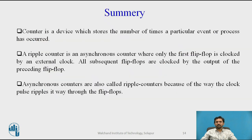In summary, a counter is a device which stores the number of times a particular event or process has occurred. A ripple counter is an asynchronous counter where only the first flip-flop is clocked by an external clock, and all subsequent flip-flops are clocked by the output of the preceding flip-flop. Asynchronous counters are also called ripple counters because of the way the clock pulse ripples through the flip-flops.